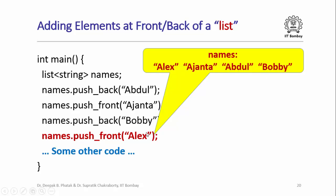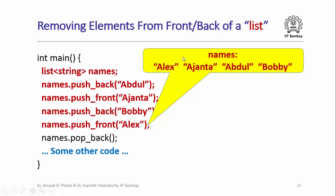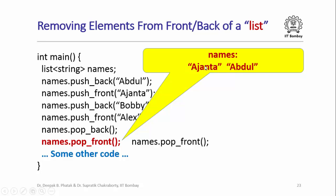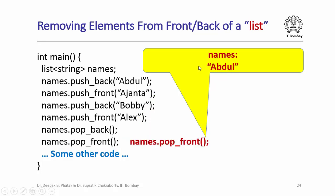After pop_back(), the list is Alex, Ajanta, Abdul — Alex is the new front and Abdul is the back. After pop_front(), Alex is removed leaving Ajanta and Abdul, with Ajanta as the new front. After another pop_front(), Ajanta is removed and the list contains only the string Abdul.